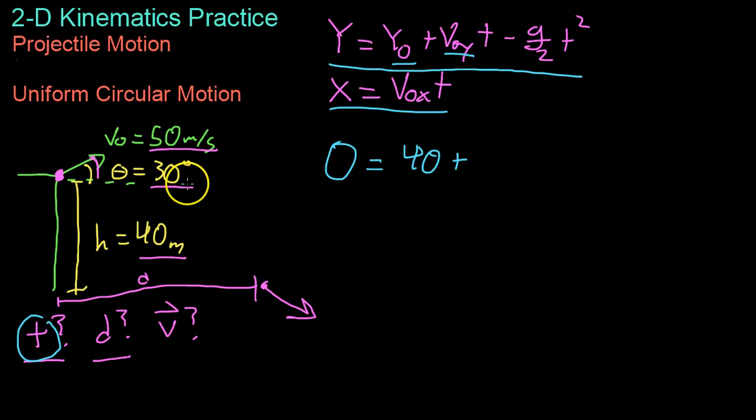Its initial height is 40 meters. And then its initial velocity is tricky. You don't want to write 50 meters per second because that's not its initial y velocity. Remember the v0y is only the component of the velocity that is going straight upwards at the time because this is the only part that's going to be affected by the straight downwards acceleration of gravity.